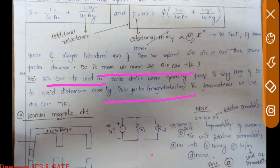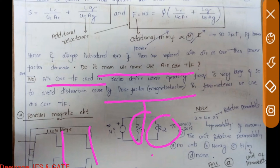Now let's take a parallel magnetic circuit with two air gaps. An example is the shell-type transformer. You can see two parallel paths with resistances R1 and R2 shown, and you can derive the equivalent circuit in the same manner as before.